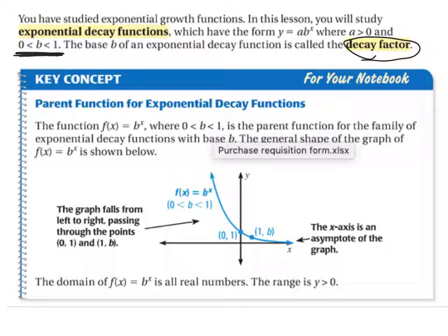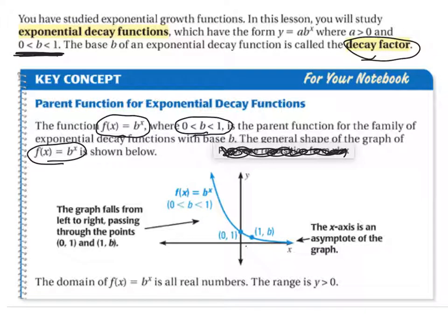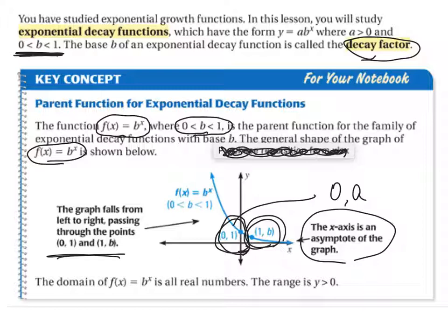The base b of an exponential decay function is called the decay factor. Parent function for the exponential decay functions: the function f of x is b to the x, where b is a fraction, is the parent function. The graph falls from left to right, passing through the points 0, 1 and 1, b. The x-axis is the asymptote. Remember, it cannot cross the x-axis. So the domain is all real numbers, and the range is y is greater than 0.